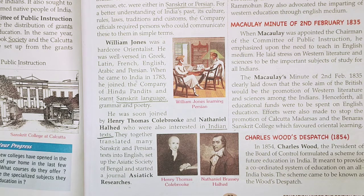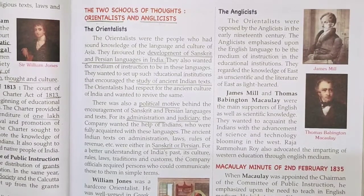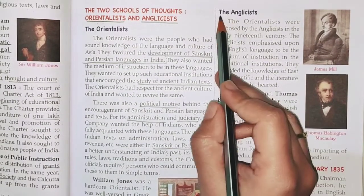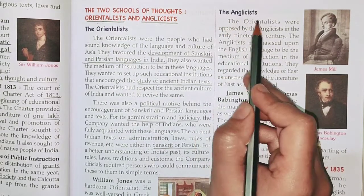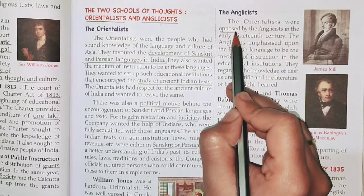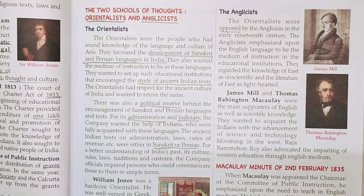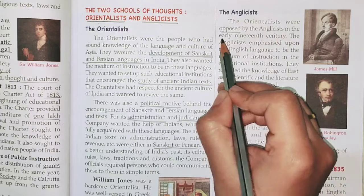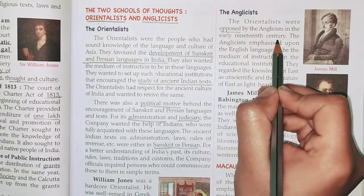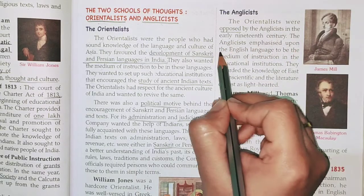Now we will study about the Anglicists — another group of people. The Orientalists were opposed, meaning they were not supported by Anglicists, in the early 19th century. The Anglicists emphasized upon the English language.